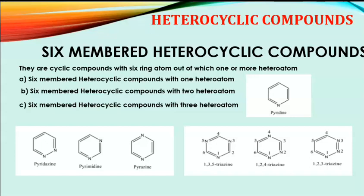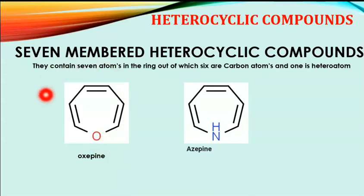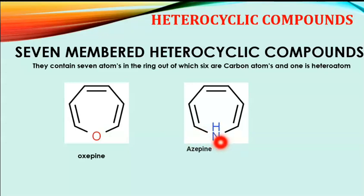Seven-member heterocyclic compounds contain seven atoms in the ring, out of which six are carbon atoms and one is a heteroatom. Examples are oxapine and azepine. In oxapine, the heteroatom is oxygen — it is a seven-member ring structure. Azepine contains nitrogen as the heteroatom and also comes under seven-member heterocyclic compounds.